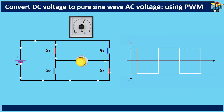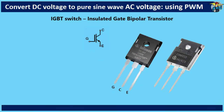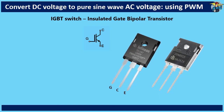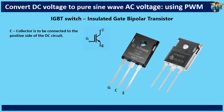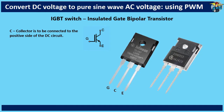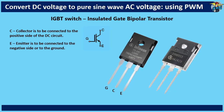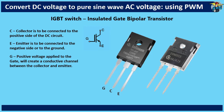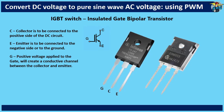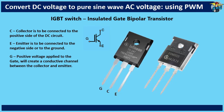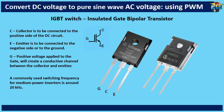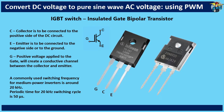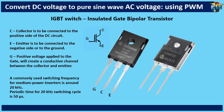To get these very small pulses without any short circuit issues, you should use IGBT switches for your H-bridge circuit. IGBT stands for Insulated Gate Bipolar Transistor. Out of the three pins on it, C is the collector and is to be connected to the positive side of the DC circuit. E is the emitter and is to be connected to the negative side or to the ground. G is the gate, and when positive voltage is applied to this gate, it will create a conductive channel between collector and emitter, allowing current to flow through the channel. A commonly used switching frequency for medium power inverters is 20 kHz. Periodic time for a 20 kHz switching cycle is 50 microseconds, and is effectively achievable with these type of IGBT switches.